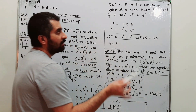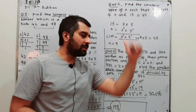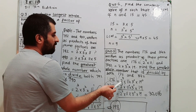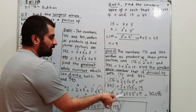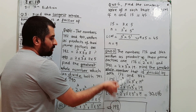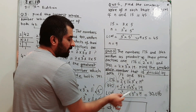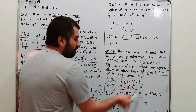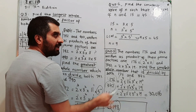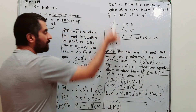For LCM, take the higher power from each column. Column of 2: 2⁴ vs 2¹ — take 2⁴. Column of 11: 11¹ vs 11⁰ — take 11¹. Column of 19: 19⁰ vs 19¹ — take 19¹. Multiply all of them together — that is your answer.